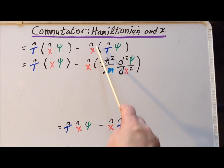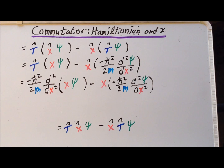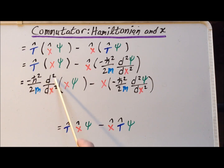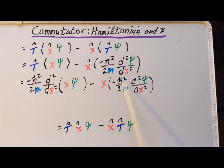We still have out in front the action of the operator x on the quantities inside the parentheses. In the third line, we formally write out what happens when the leftmost operator acts. On the left we have minus h-bar squared over 2m times the second derivative with respect to x of the quantity x times ψ. On the right, we replace the position operator x with its definition — simply multiplication by x — which multiplies through the quantity on the right-hand side.